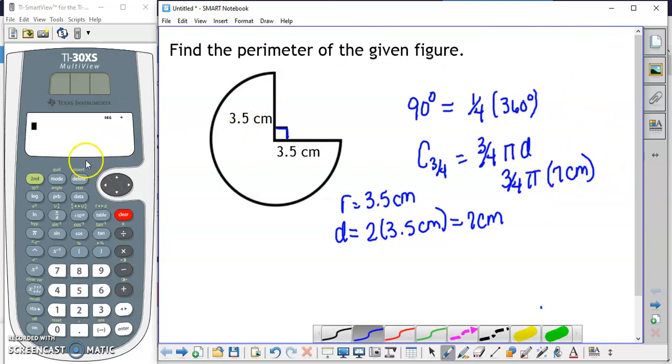Let's put that in the calculator. Three-fourths times pi times 7 equals 21 divided by 4 times pi.